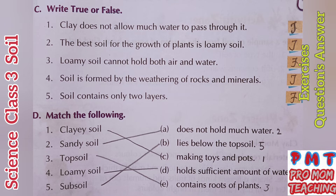Match the following. First: clayey soil — match it with making toys and pots. Next: sandy soil — match it with does not hold much water. Third: topsoil — match it with contains roots of plants. Fourth: loamy soil — match it with holds sufficient amount of water. Fifth: subsoil — match it with lies below the topsoil.